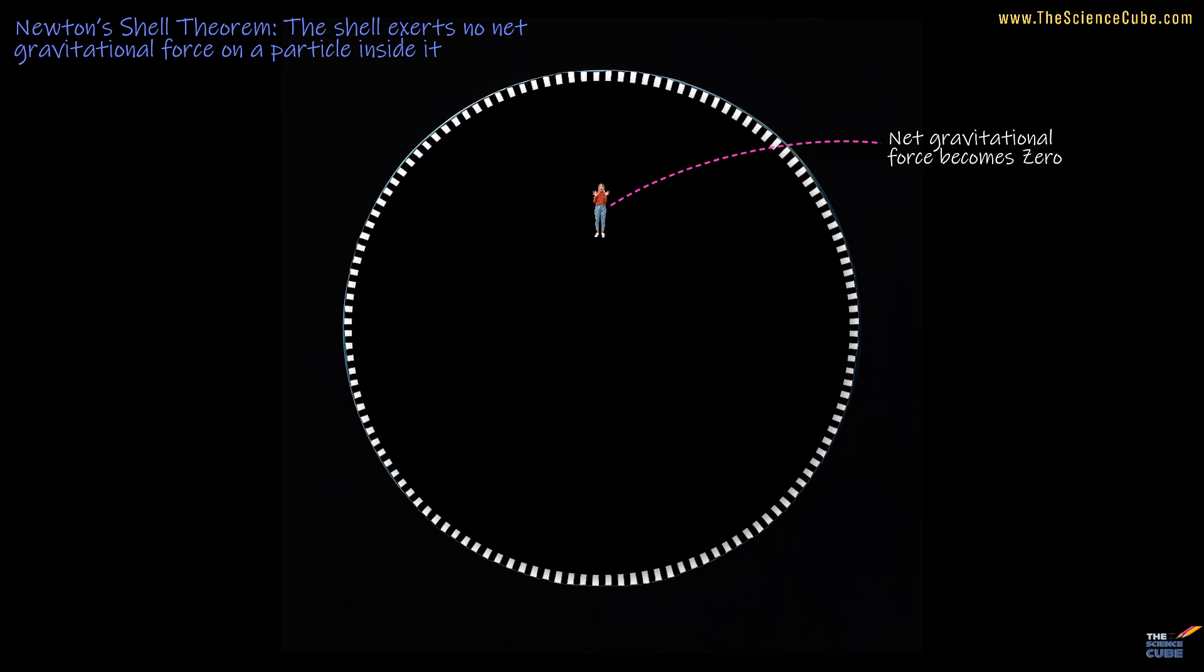Imagine a tiny patch of mass on one side of you. There is an opposing patch on the exact opposite side of the shell. The patch that is further away exerts a weaker force, but there is more area out there. You are surrounded by many such patches. On the other hand, the patches that are closer exert stronger forces, but there are fewer of them. And these opposing effects balance out beautifully.